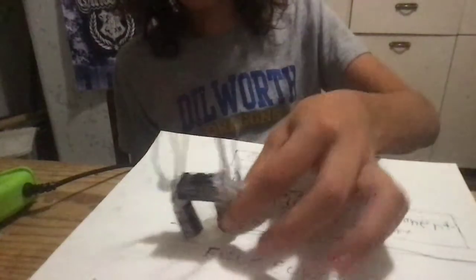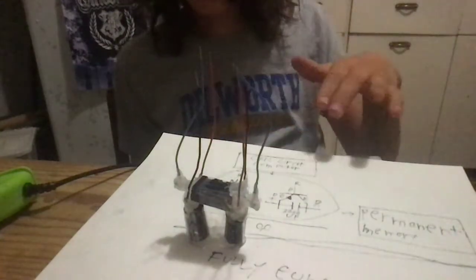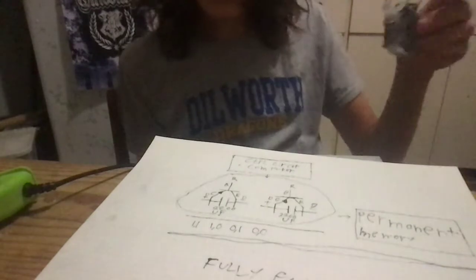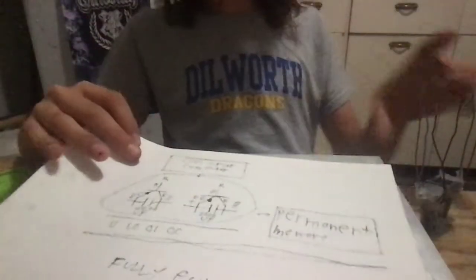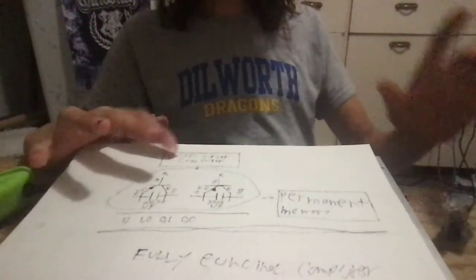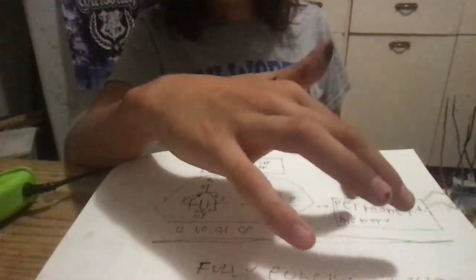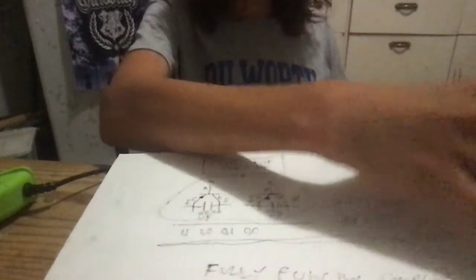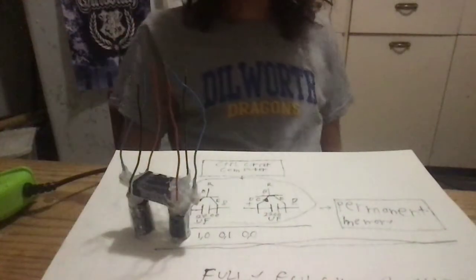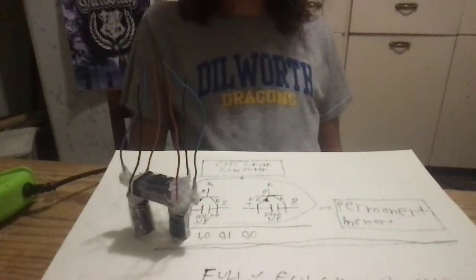This little circuit will be able to store all of the one one, one zero, zero one, zero zero. And if we make a computer control circuit thingy and a permanent memory storage, we'd have a fully functional computer. Not a very good one, but still one.